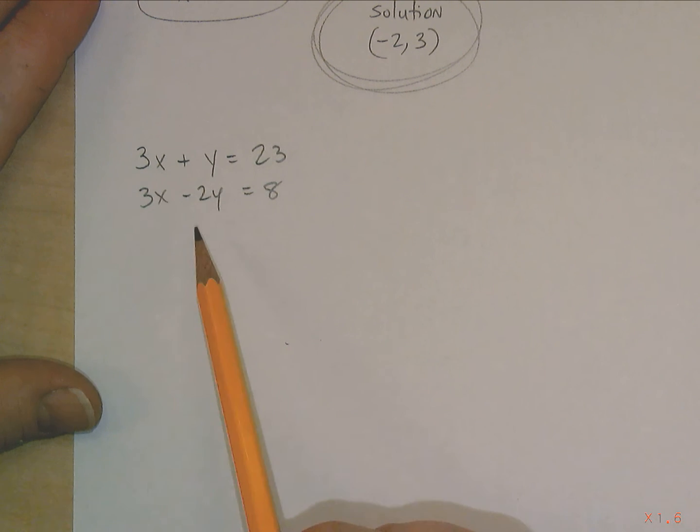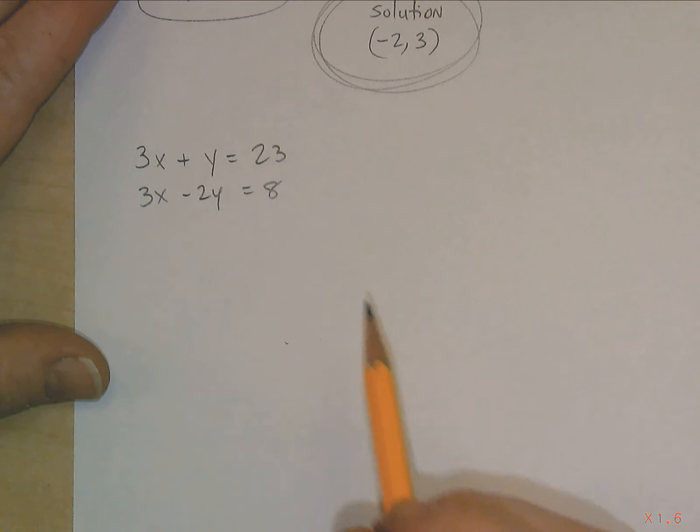So you can't really add these because if you add them, this will become 6x. This will not cancel out. This will become like negative 1y, and this will become 31. And so you really don't want to add this because it will just throw you into utter chaos basically. So that's not going to work.